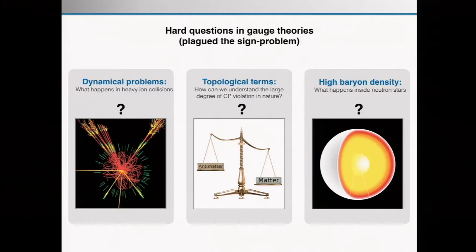The first class is everything that is dynamical — time evolutions. The second is so-called topological terms that can be added to the standard model in order to study, for instance, CP violations to understand why there is more matter than antimatter. And of course, problems with high baryon density. I'm sure Marie Carmen probably talked about this.